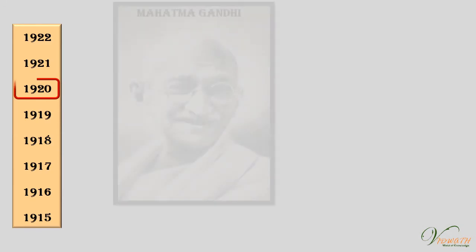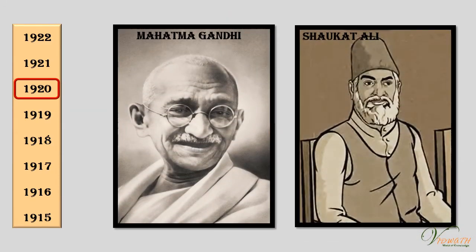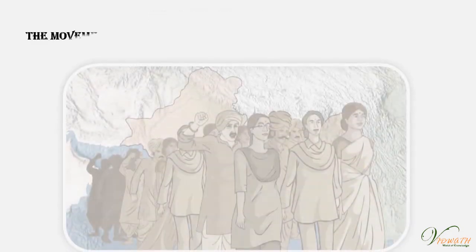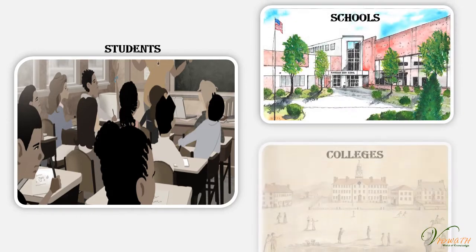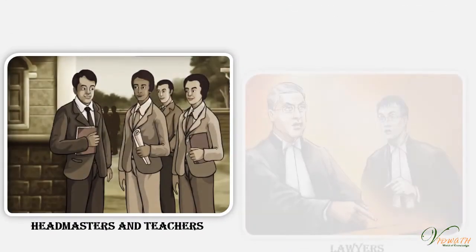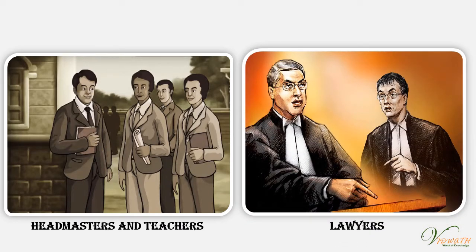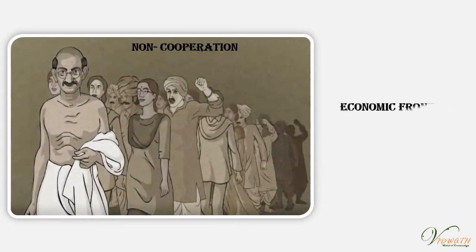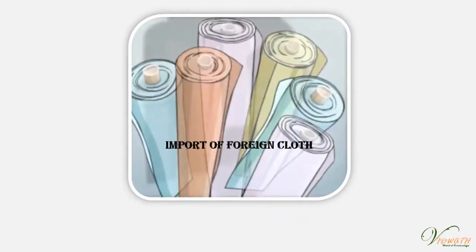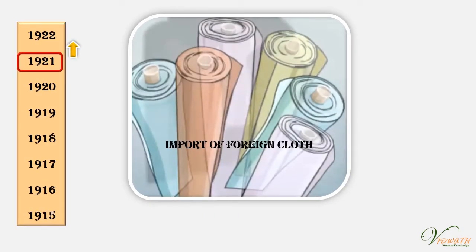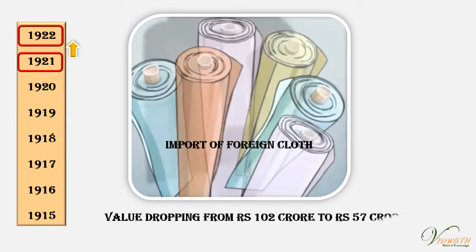Through the summer of 1920, Mahatma Gandhi and Shaukat Ali toured extensively, mobilising popular support for the movement. The movement started with middle-class participation in the cities: thousands of students left government-controlled schools and colleges, headmasters and teachers resigned, and lawyers gave up their legal practices. Foreign goods were boycotted, liquor shops picketed and foreign cloth burnt in huge bonfires. The import of foreign cloth halved between 1921 and 1922, its value dropping from Rs. 102 crore to Rs. 57 crore.